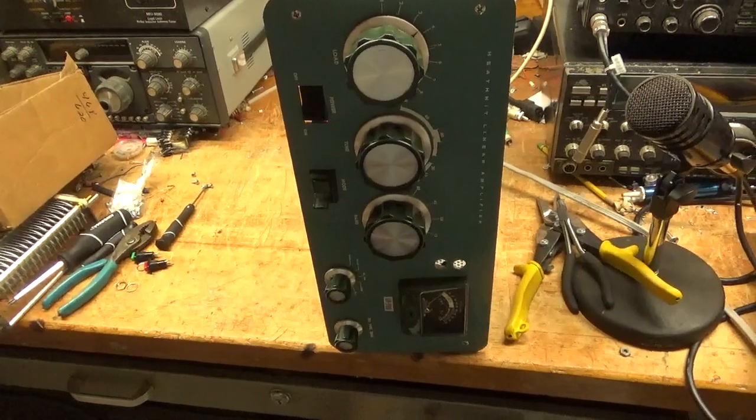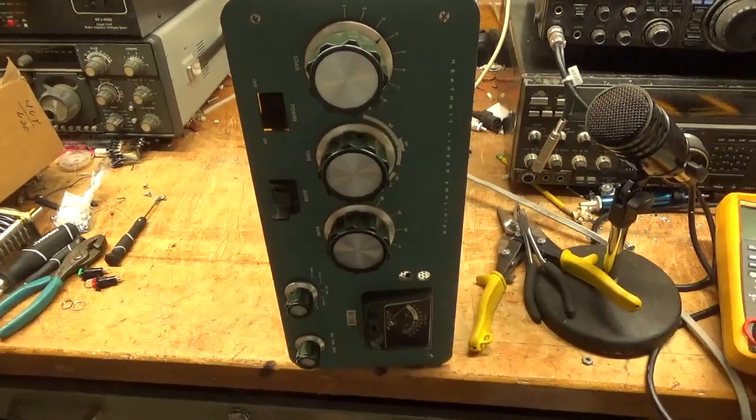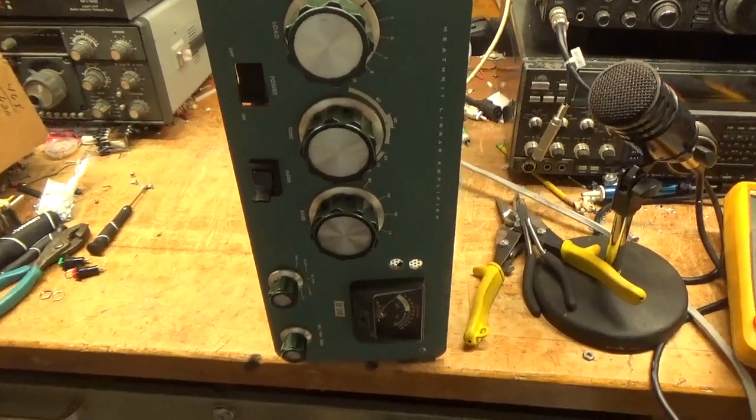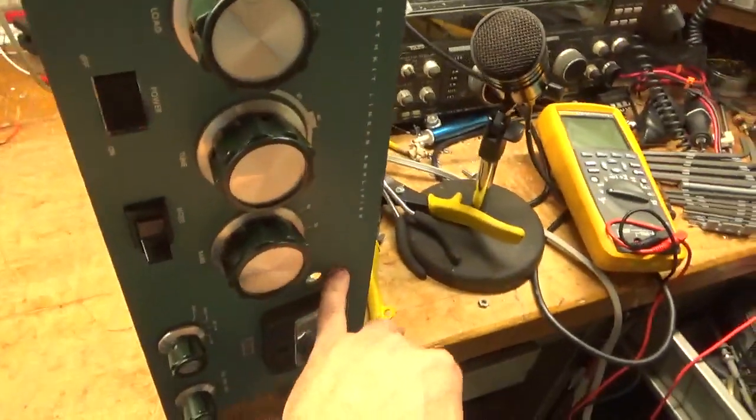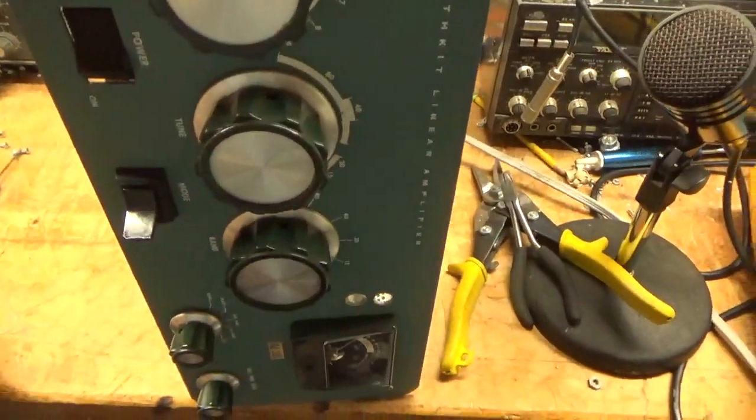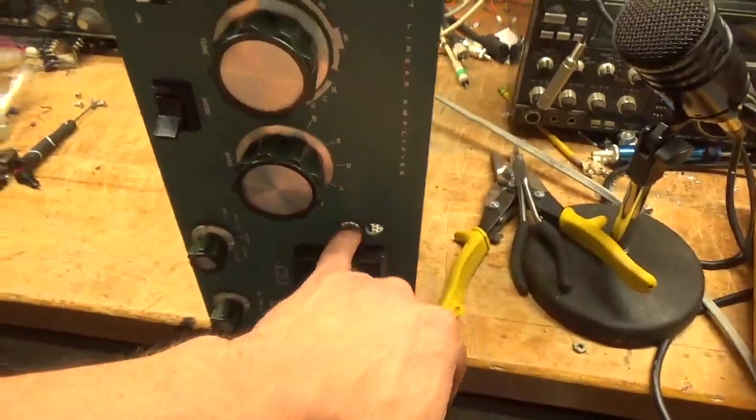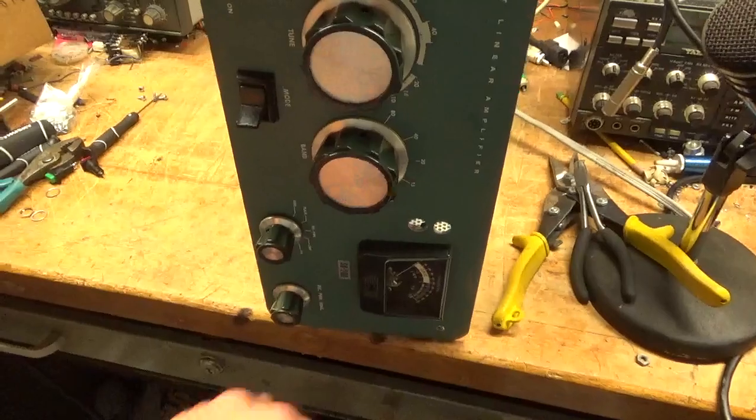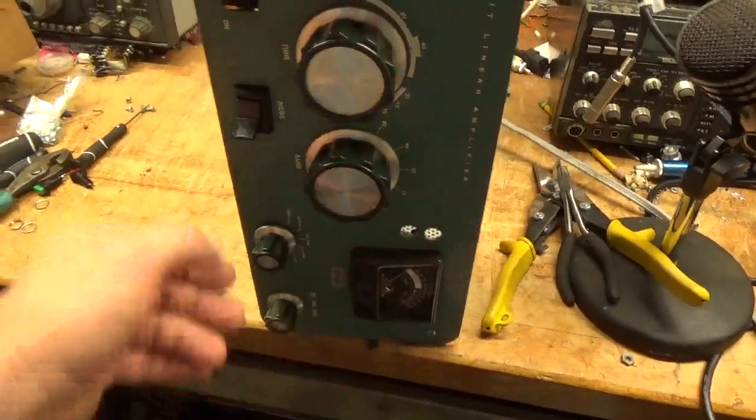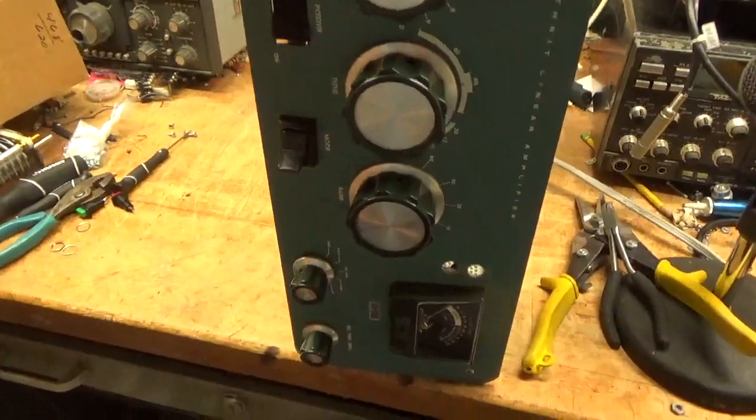Hey everybody, AmpRepairGuy.com here. So we have the Heathkit SB200, it's all finished up. Those indicator lamps did not work, they're sealed, I couldn't get them apart. So the customer is just going to have me plug the holes up, has the standby operate switch still.